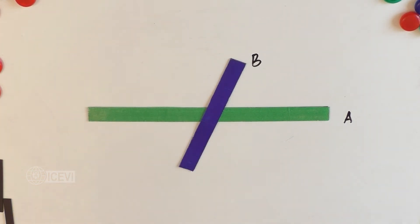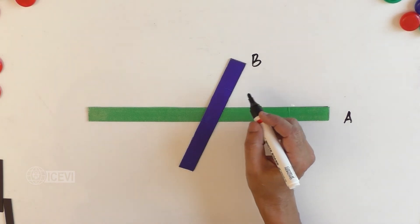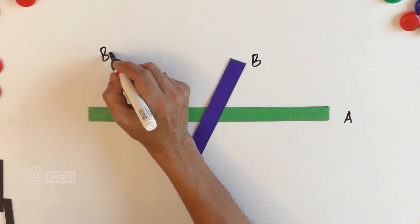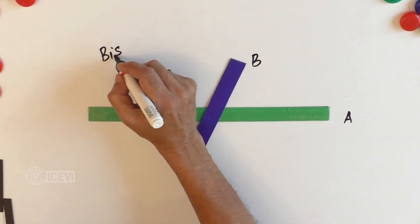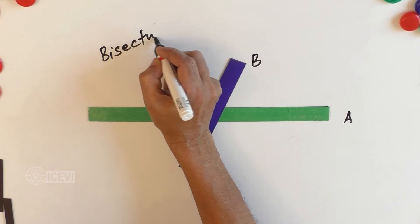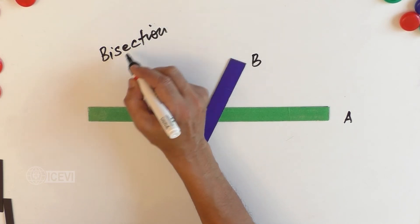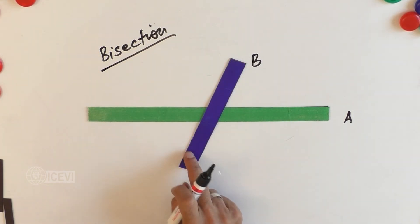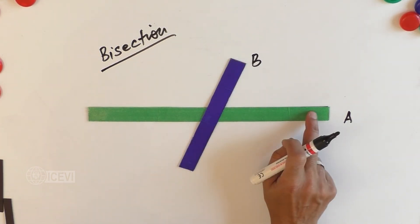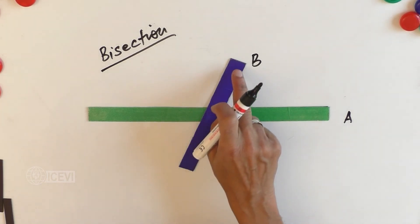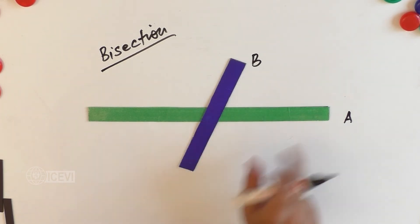This is called bisection. That means one line is dividing the other line into two halves.